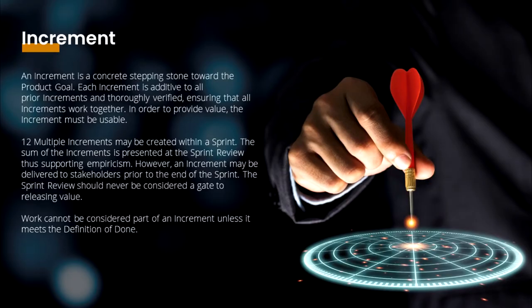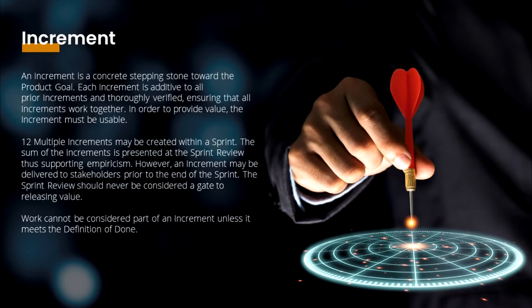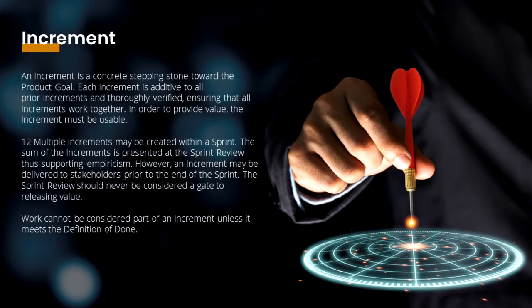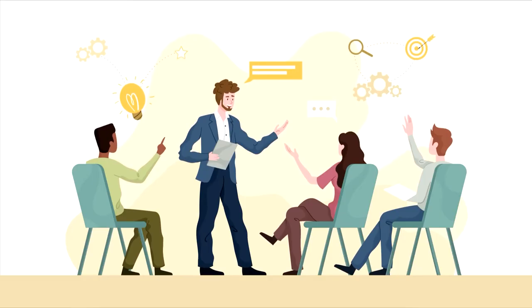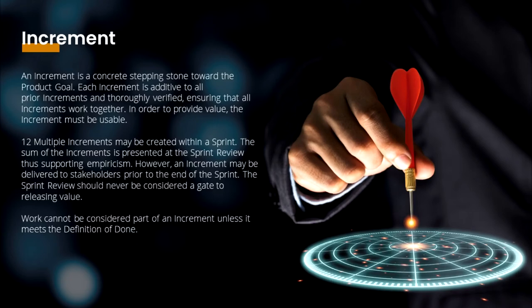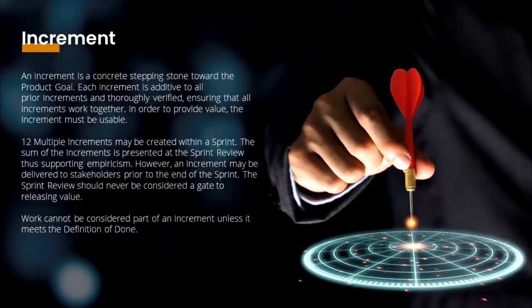Increment. An increment is a concrete stepping stone towards the product goal. Each increment is additive to all prior increments and thoroughly verified, ensuring that all increments work together. In order to provide value, the increment must be usable. Multiple increments may be created within a Sprint. The sum of the increments is presented at the Sprint Review, thus supporting empiricism. However, an increment may be delivered to stakeholders prior to the end of the Sprint. The Sprint Review should never be considered a gate to releasing value.